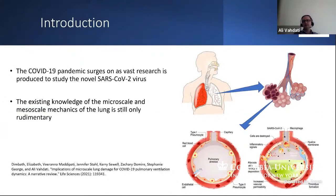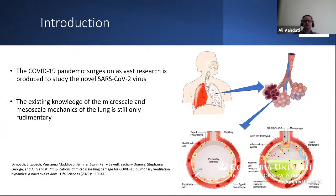We all know that the COVID-19 pandemic still surges on, especially with the new Delta variant. The virus can cause extensive damage and progressive changes to the lungs among other tissues and organs, particularly in patients with COVID-19 acute respiratory distress syndrome. As seen in this graphic, in the alveoli of the lung, COVID-19 can cause complex changes such as fibrosis, cell death, and thrombosis formation.